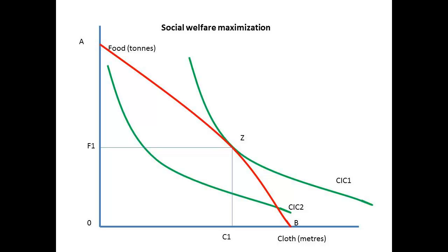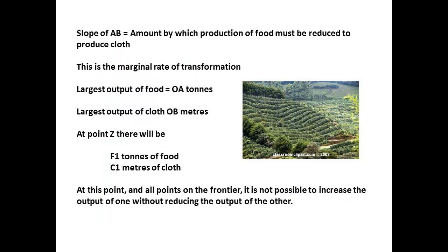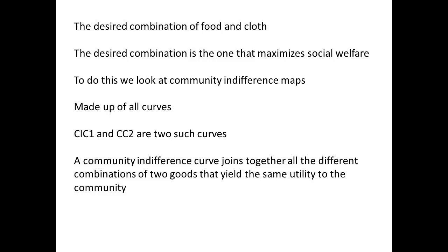Which of the many combinations of food and cloth will be chosen? C1C1 and C1C2 are community indifference curves, which show a community's preference. C1C1 is the highest of these curves that can be reached, and it meets the curve AB at point Z. The highest attainable community indifference curve is at a tangent to AB at point Z. At this point we have F1 tons of food being produced and C1 meters of cloth. We cannot increase either of these quantities without reducing the output of the other one. A community indifference curve joins all the points of all the different combinations of two goods which yield the same utility to a community.